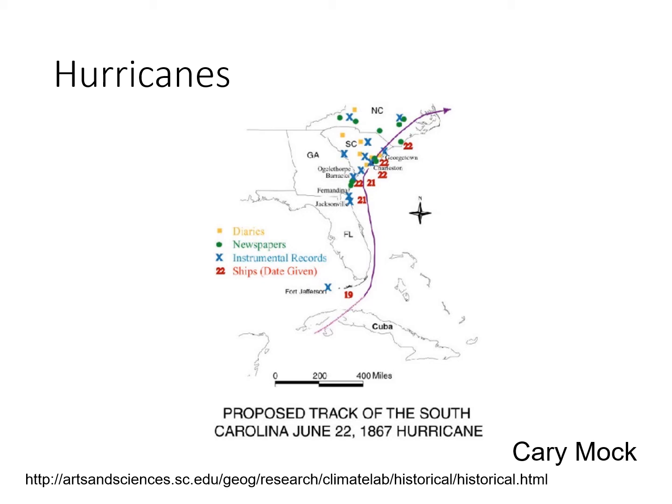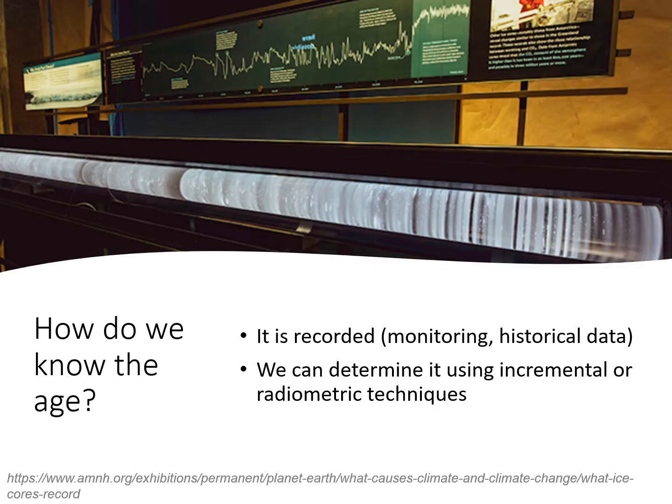Here you can see a track of an 1867 hurricane that Kerry was able to determine — how hurricane tracks and intensity might change in response to warming temperatures. Historical documents almost always have some sort of date associated with them, but when we look at other archives, how do we know the age of these paleo records?